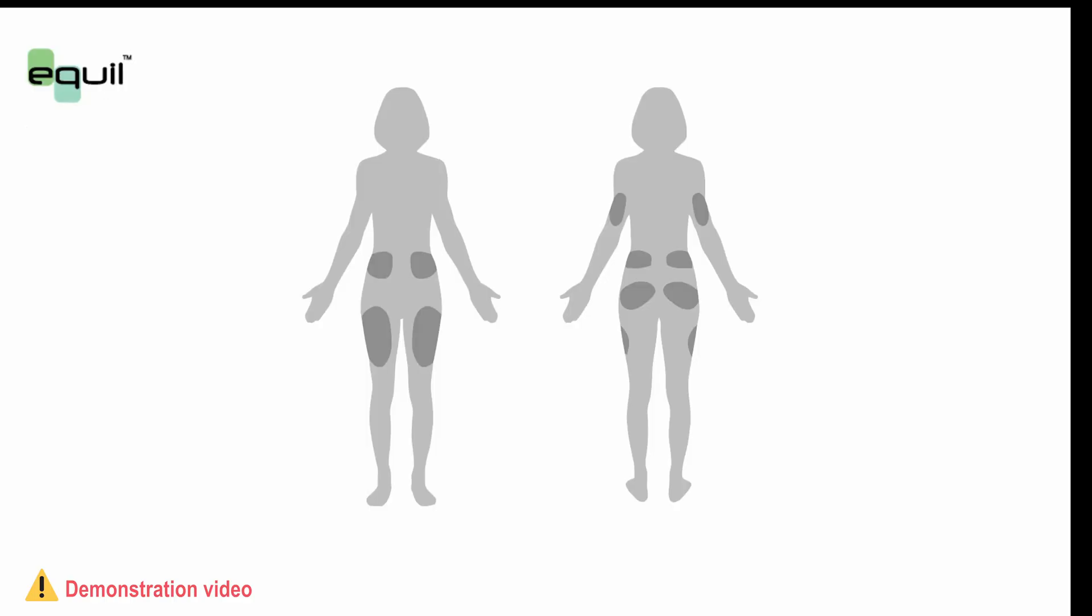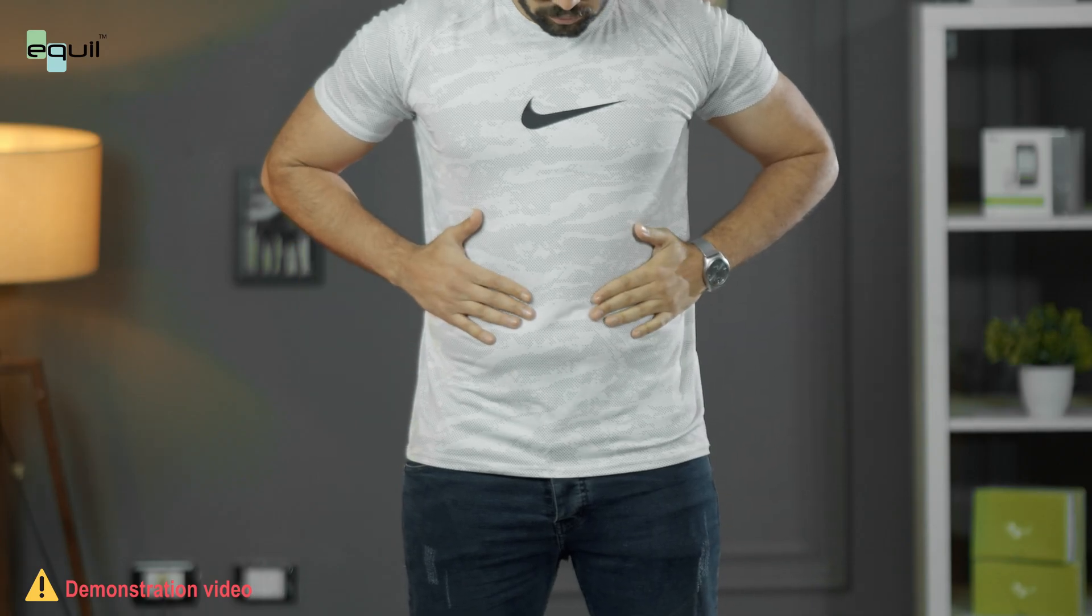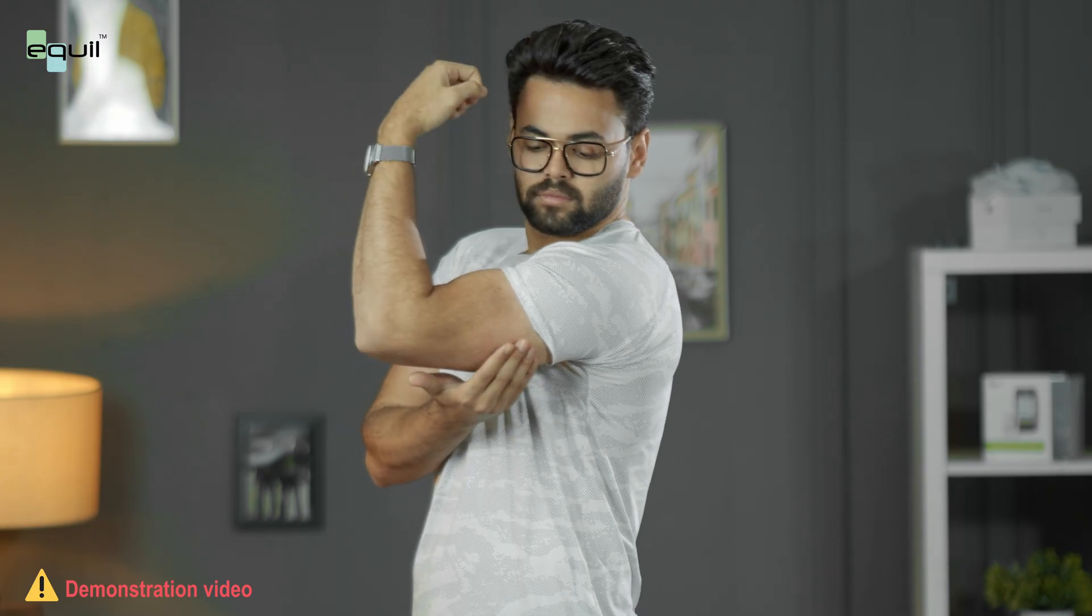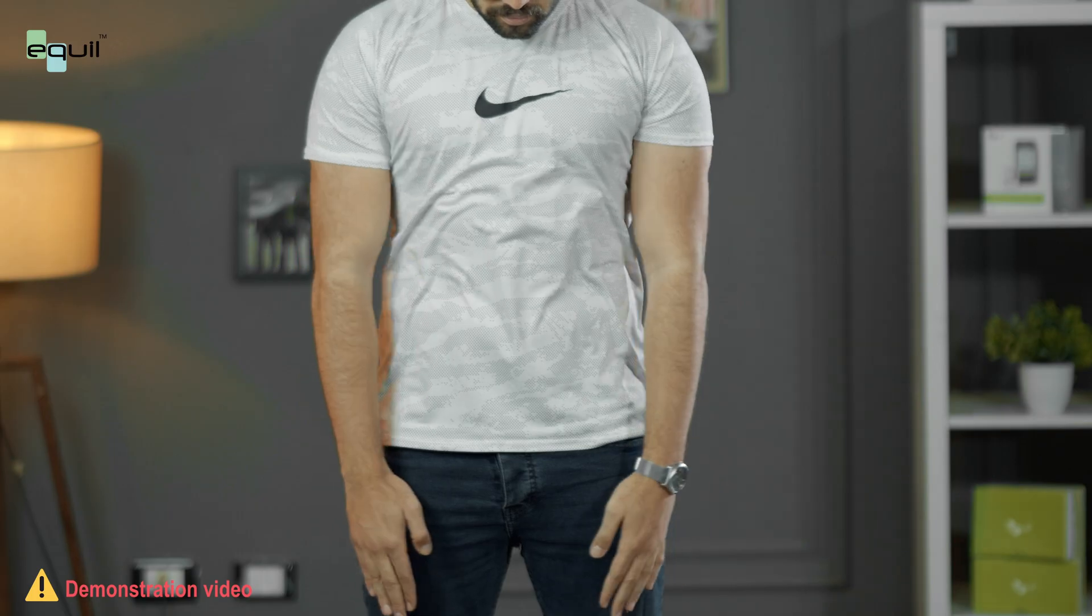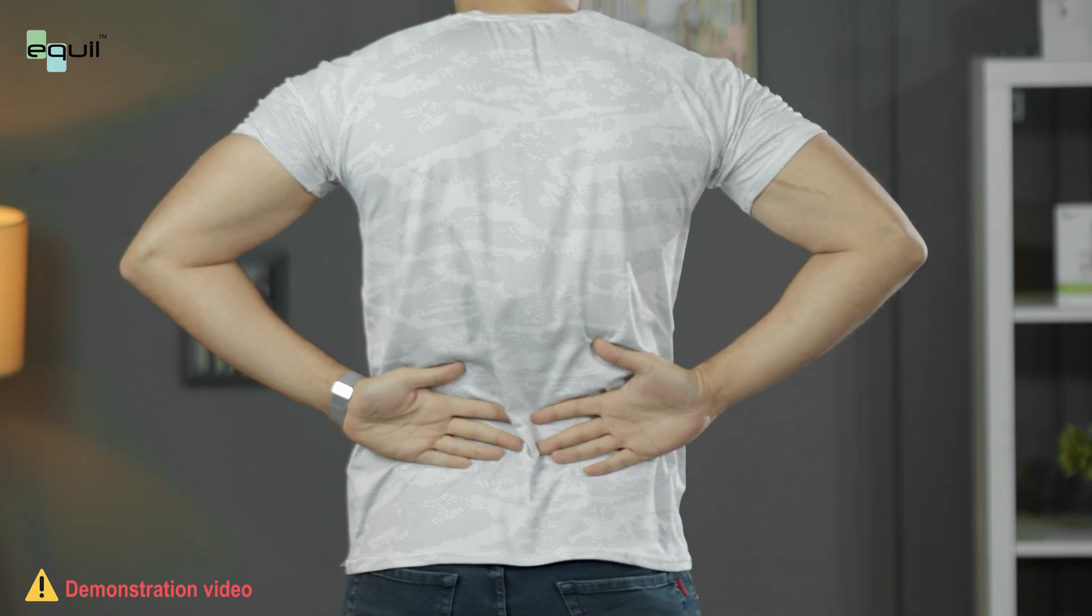In the first step, we determine the appropriate injection site from several suggested areas, including the abdomen on both sides of the navel, the upper arm from the back, the thighs, and the lower back. When choosing the injection location, it is imperative to avoid anything that may rub against the pump, such as tight clothes or belts.